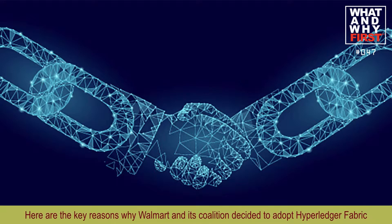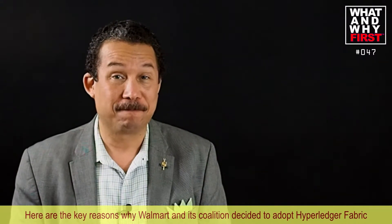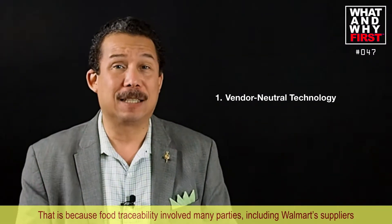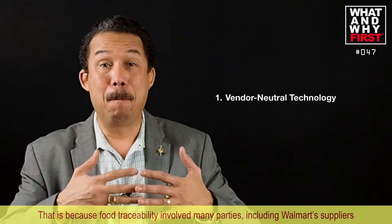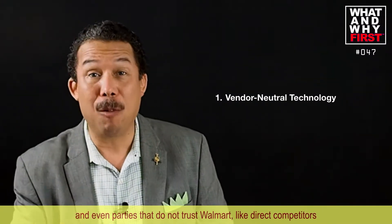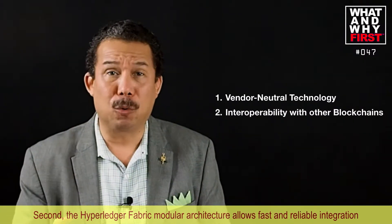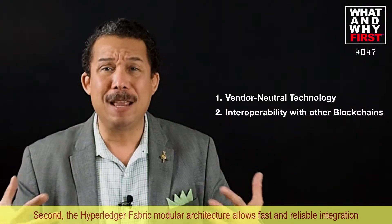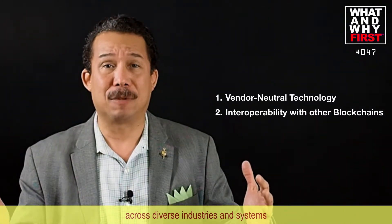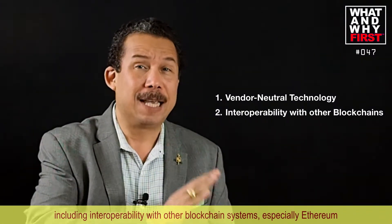Here are the key reasons why Walmart and its coalition decided to adopt Hyperledger Fabric. First, for the solution to work, an open and vendor-neutral technology ecosystem was needed. That makes sense, because food traceability involves many parties, including Walmart suppliers and even parties that do not trust Walmart, like direct competitors. Second, the Hyperledger Fabric modular architecture allows fast and reliable integration across diverse industries and systems, including interoperability with other blockchain systems, especially Ethereum.